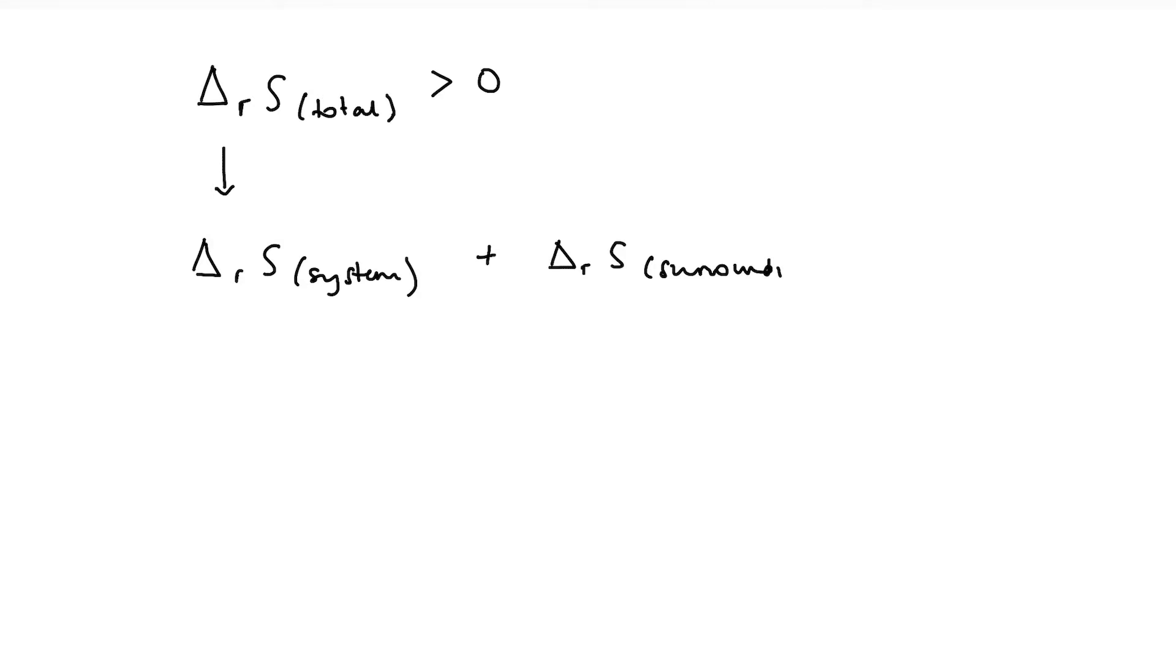We know that the total entropy change for a process is made up in part by the entropy change for the system or the chemical reaction, and the entropy change of the surroundings. Because entropy, total entropy is indicating the total entropy change within the universe as a whole. So it's system plus surroundings. Now, we can calculate the entropy change of the surroundings during a chemical reaction.